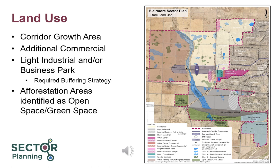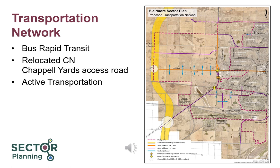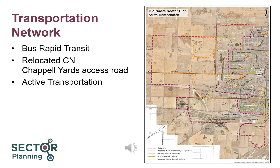The Sector Plan identifies the afforestation areas as open space or green space, consistent with the proposal to conserve the areas. The Sector Plan proposes the extension of bus rapid transit further west down 22nd Street, not expected to occur until closer to the time of development west of Nault Road. The access road to the CN Chapel Yards is proposed to be relocated further to the west, moving it away from the Montgomery Place neighbourhood. Active transportation in the Blairmoor sector is proposed to mirror what is shown in the Citywide Active Transportation Plan. Multi-use pathways and cycling infrastructure are proposed throughout the sector, with more detailed plans to be determined through the concept plan process for each area of development.